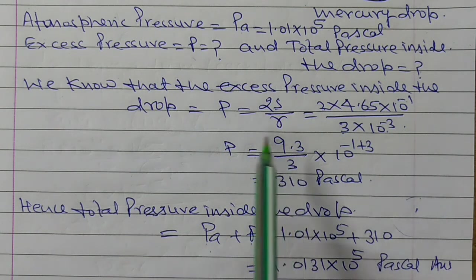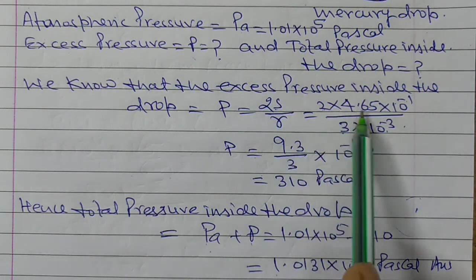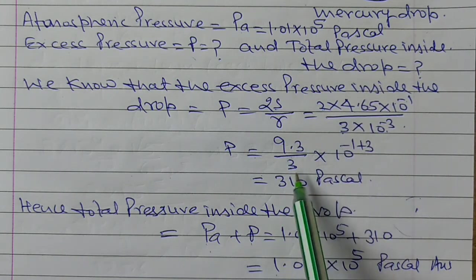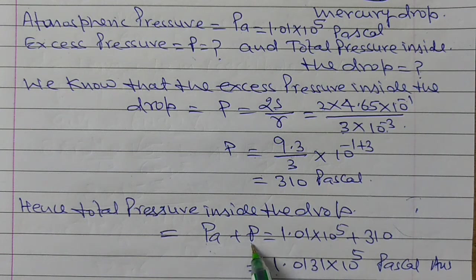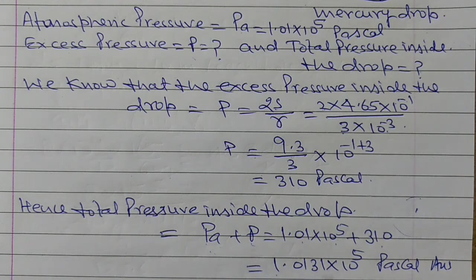So to summarize: we needed to find the excess pressure inside the drop and the total pressure. Using the formula 2S/R, putting in values 2 × 9.3 / 3 with the powers, we get 310 Pascal as excess pressure. For total pressure inside the drop, adding both pressures — 1.01 × 10⁵ atmospheric pressure plus 310 excess pressure — gives 1.0131 × 10⁵ Pascal. Thank you.